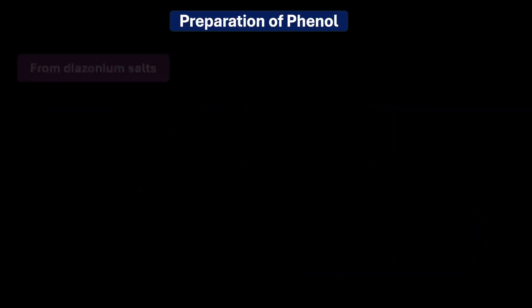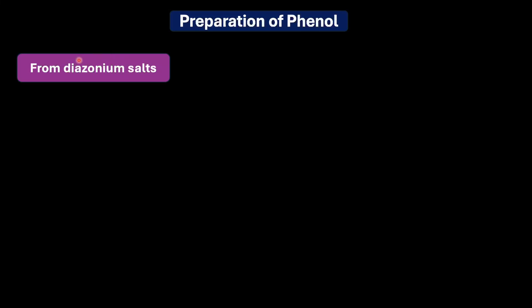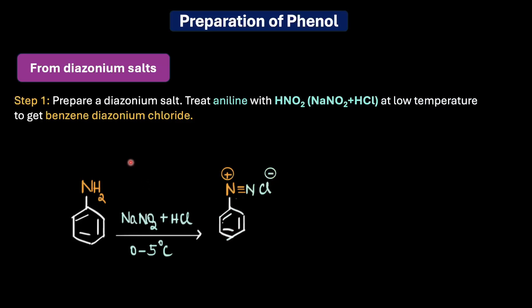Next comes the diazotization route — one of my personal favorites. We first prepare diazonium salt from aniline by treating aniline with nitrous acid (HNO₂), which is prepared in situ by reacting NaNO₂ and HCl. We cannot have HNO₂ readily available because it is highly reactive and unstable — it would immediately decompose to produce toxic gases like NO₂. The best approach is to prepare it in situ, and the reaction must be carried out at low temperature: 0 to 5°C, usually in an ice bath.